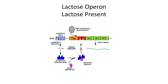Now let's talk about what happens with the lac operon when lactose is present in the environment. Again, the lac operon is an example of an inducible operon, so now that lactose is present, we want to turn the structural genes on — meaning we want to transcribe and translate them so we can produce enzymes to break apart the sugar lactose.